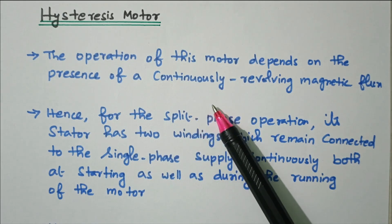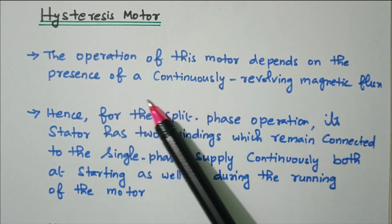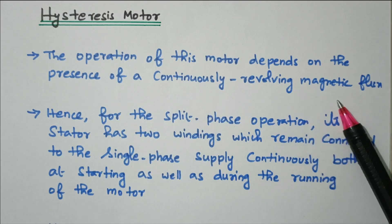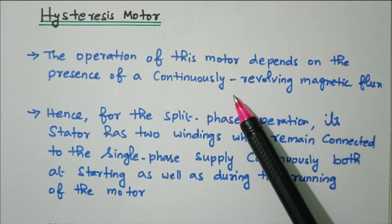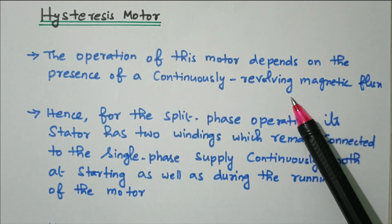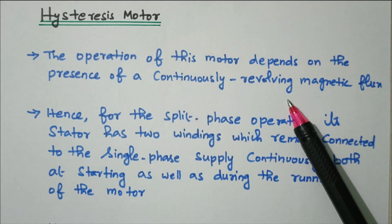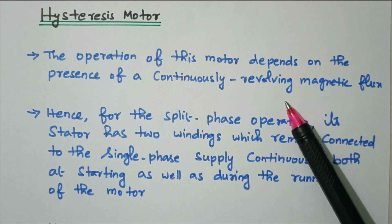The operation of this motor depends on the presence of a continuous revolving magnetic flux. What is continuous revolving magnetic flux? The flux is produced in a winding. If a single winding is there, the flux produced during the positive cycle is cancelled by the negative cycle, so there is no net flux.